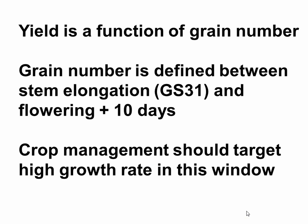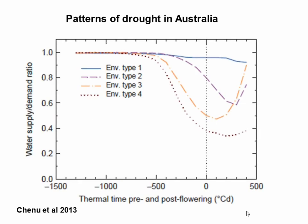So yield is a function of grain number. Grain number is defined in a critical window that depends on the crop. Crop management should target a high growth rate in this window. There may be risks — we might run out of water if we have high growth rate early — but the question is how we manage that balance. If we are too conservative to save water for grain filling, we might be losing opportunities for high yields. For wheat, the real yield killer is water deficit starting around 400 degree-days before flowering — stem elongation to flowering is causing the greatest yield penalties. Terminal drought during grain filling matters, but the yield was largely lost before that.